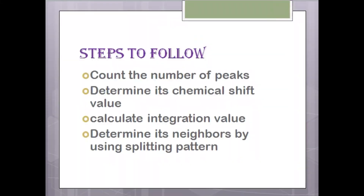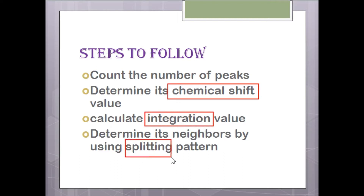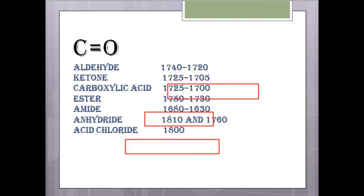There are four steps, as we have already discussed, used to solve any NMR spectra. First, count the number of peaks, as the number of peaks tells us about the different kinds of atoms. Next, determine the chemical shift value, which tells us about what kind of functional group is present. Then calculate the integration value, which tells us how many kinds of protons or carbons are present in a peak. Finally, determine its neighbors using the splitting pattern, which gives us information about neighboring atoms and helps us join our fragments.